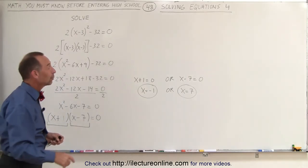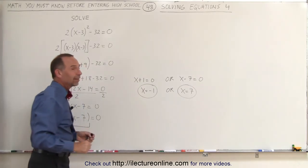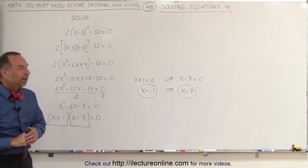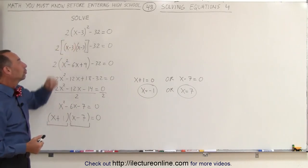And you can try it again with the number 7. If you plug in the number 7, you'll see that you'll get the left side equal to the right side as well. And that's how you solve a quadratic equation which includes parentheses.